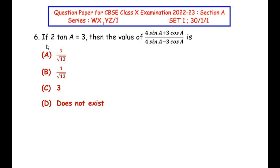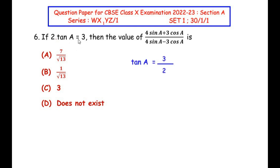The sixth question is from the introduction to trigonometry chapter. If 2 times tan A is equal to 3, then the value of (4 sin A + 3 cos A) / (4 sin A − 3 cos A) is. Let us concentrate on the given hint: 2 tan A = 3, so taking 2 to the other side, tan A = 3/2.